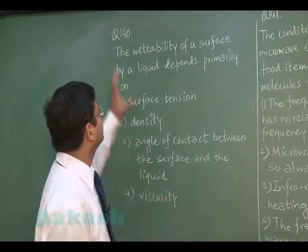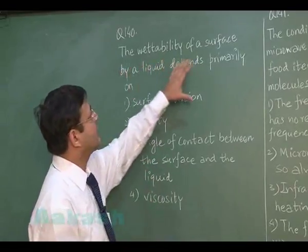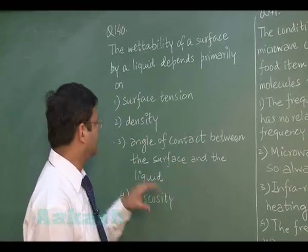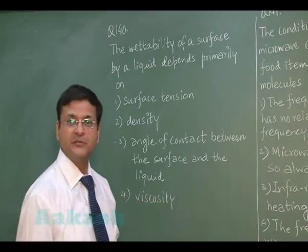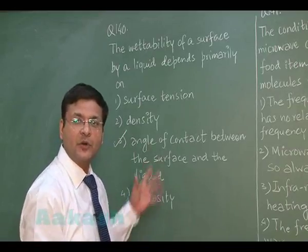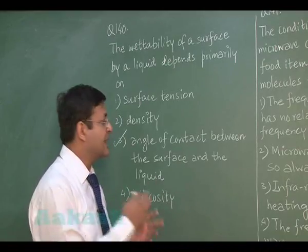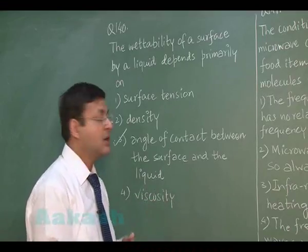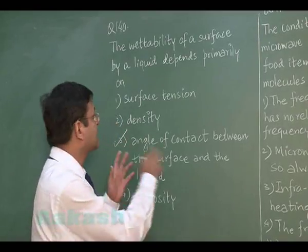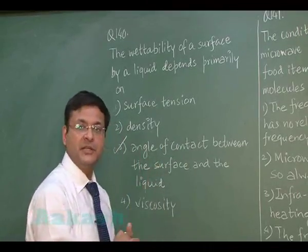Question 140 is information-based: the wettability of a surface by a liquid depends primarily on — surface tension, density, angle of contact, or viscosity. The most appropriate option is the third one — angle of contact. When the angle of contact is more than 90 degrees the liquid does not wet the surface, as seen with mercury; for water it is less than 90 degrees and the surface is wetted. Surface tension may be involved but indirectly.